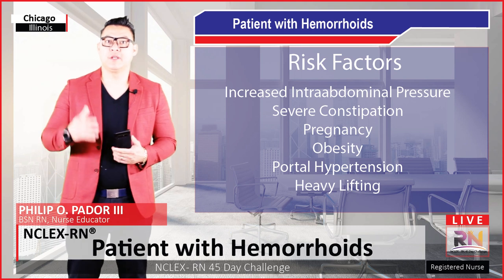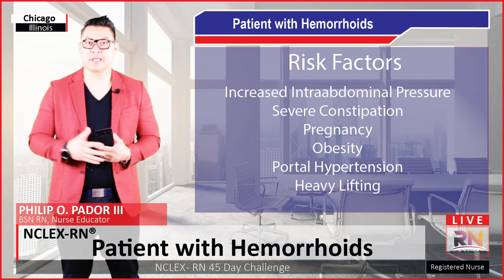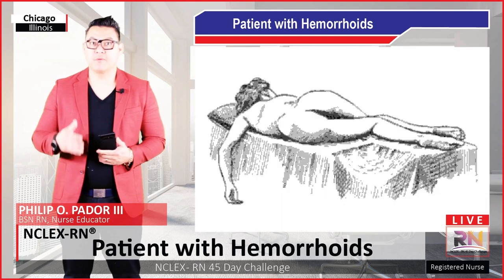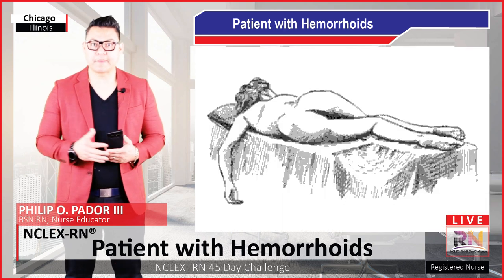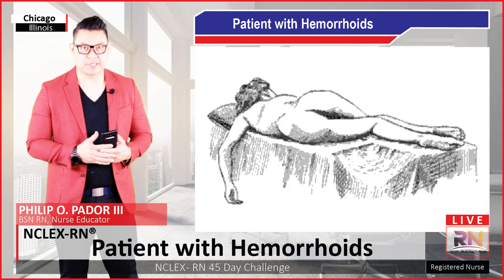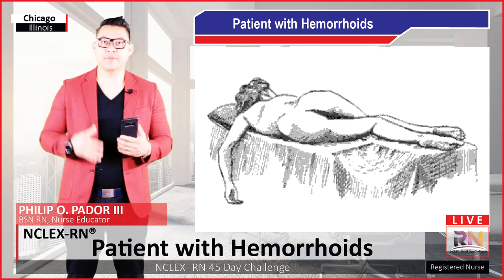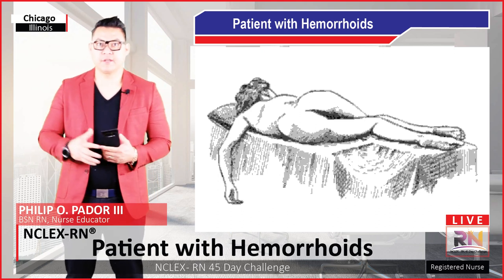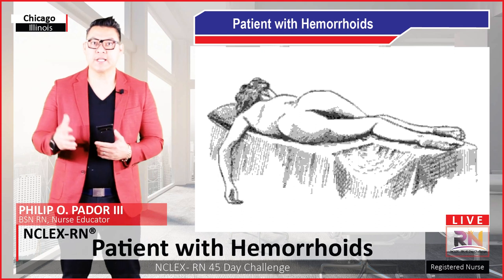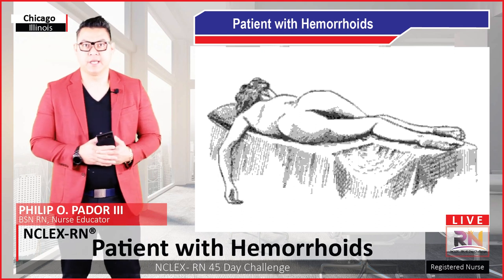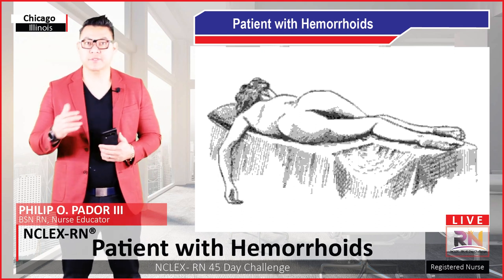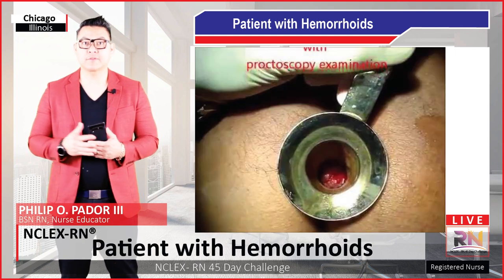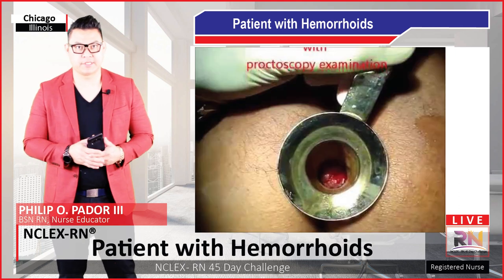On examination, we want to position the patient in the left lateral position, with knees up to the chest to expose the anal area. On general inspection, external hemorrhoids may be visible. However, the use of a proctoscope or an anoscope may be useful to examine for internal hemorrhoids.